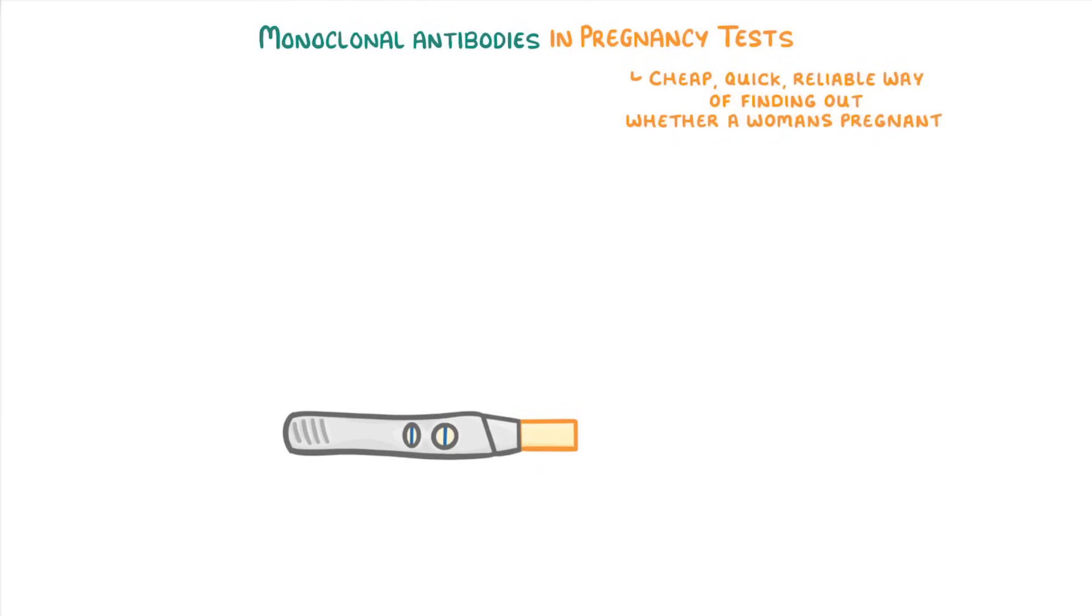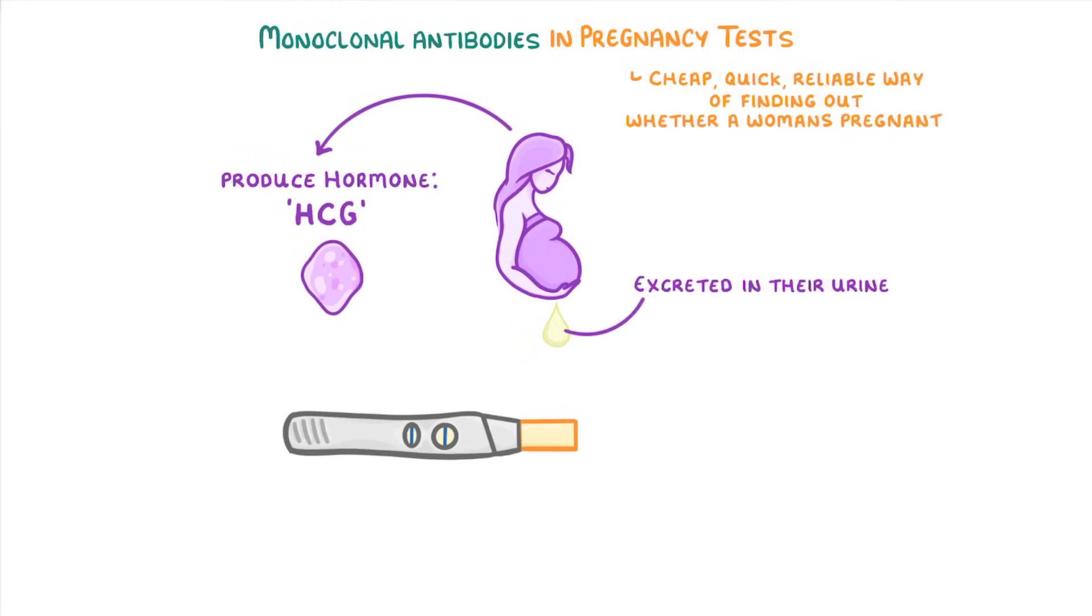The key idea behind them is that pregnant women produce a hormone called HCG, which is excreted in their urine, and this little test kit is able to detect the HCG chemicals.